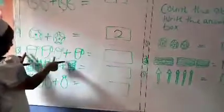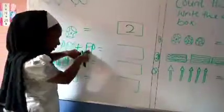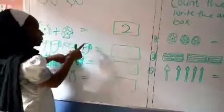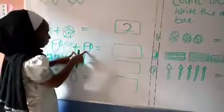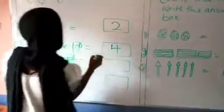Number 3. We have cups here. Let's count the cups. 1, 2, 3. Plus this 1 cup again. You add it to this 3. 1, 2, 3. Plus 1. 1, 2, 3, 4. Number 4. There are 4 cups there.